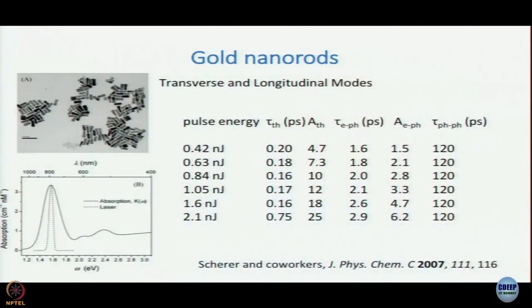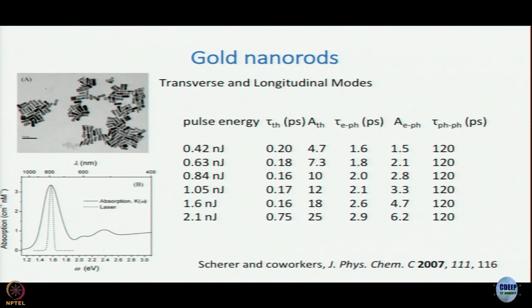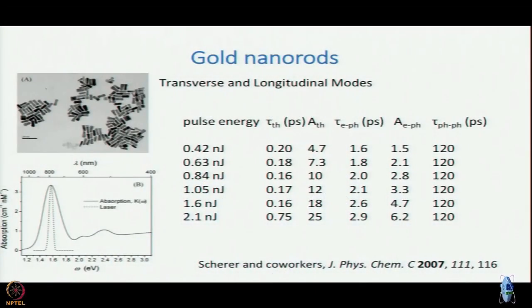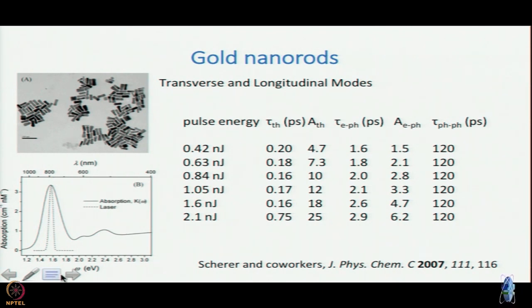Gold nanorods have a more interesting spectrum than gold nanoparticles, because here there are two axes. If you have a rod, you have a length and a diameter, so you have actually two modes: a longitudinal mode and a transverse mode. The transverse mode will be associated with higher energy. Here you see a spectrum from Norbert Scherer and co-workers, where this is the longitudinal mode at about 800 nanometers, 1.6 electron volt, and the transverse mode is around 2.4–2.3 electron volt, something like 500 nanometers.